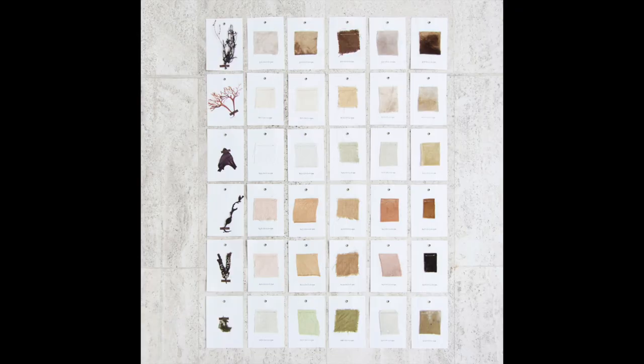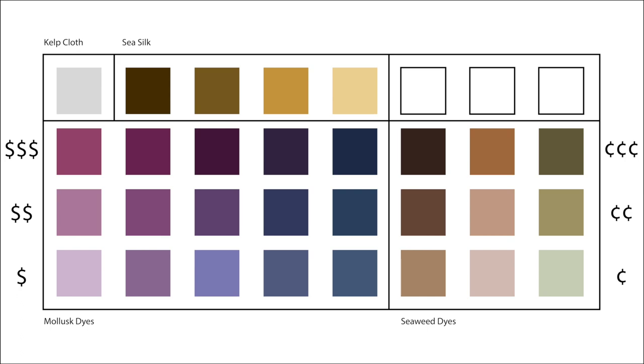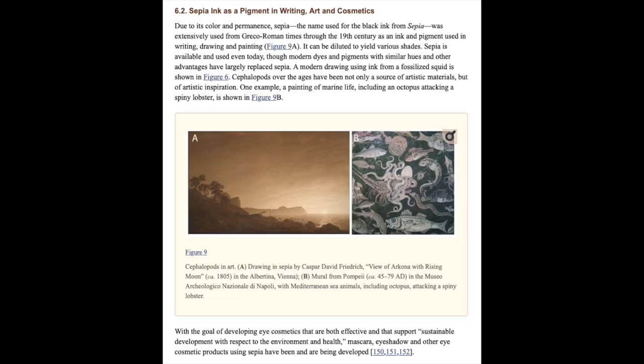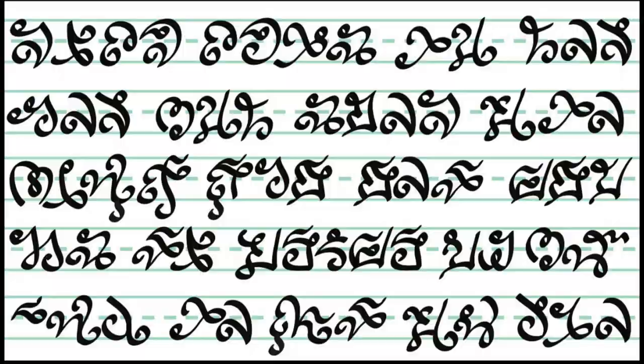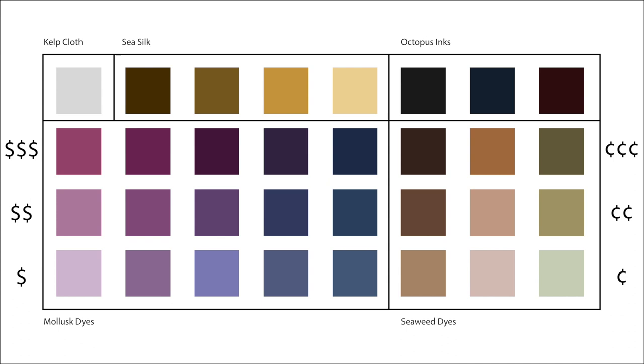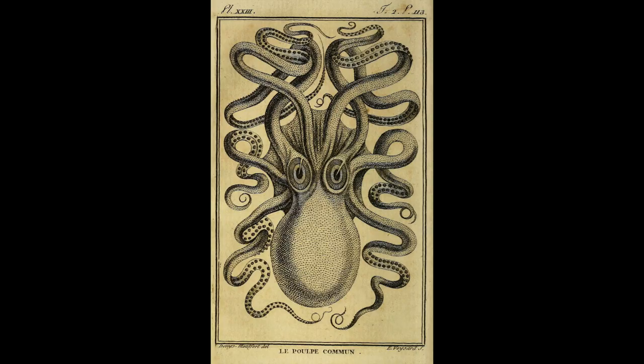I found research on ways seaweed and kelp could be used as dye — which is where the idea for kelp cloth came from — producing a variety of shades of green, gold, brown, and even gray and pink. And finally, octopus ink. I couldn't find reference to octopus ink being used as fabric dye historically, but it did have many uses including as writing ink — which, if you were wondering why they would use brushes and have a swirly, curly written language, there you go: they had octopus ink. Octopus ink is usually black, but can also be dark navy blue or dark brown.